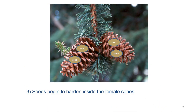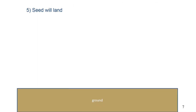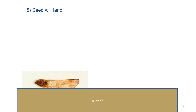Seeds then begin to develop inside the female cones. A large pine tree can have hundreds or more female cones. The seed is later released and transported by wind — conifer seeds are wing-shaped, so when released they float on the wind until they reach the ground, where they will germinate and grow.